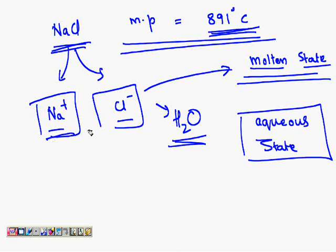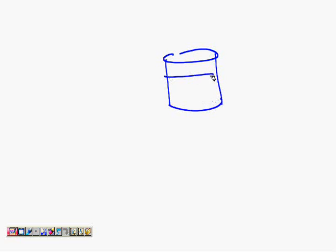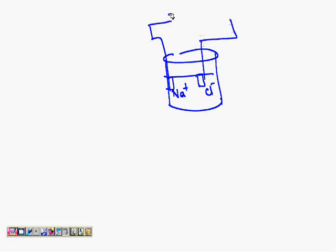Now, once Na⁺ and Cl⁻ ions are there, I am using a vessel in which I have these ions. I am using two rods which are good conductors of electricity. One is connected to the positive terminal of the battery, represented by the longer line. The other is connected to the negative terminal, represented by the shorter line. Of course, there is also a switch.